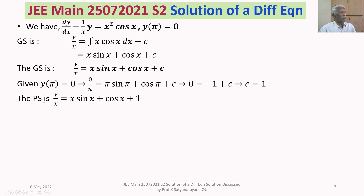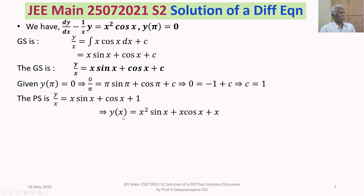With c = 1, the particular solution is y/x = x sin x + cos x + 1. Multiplying both sides by x, the solution is y(x) = x² sin x + x cos x + x.